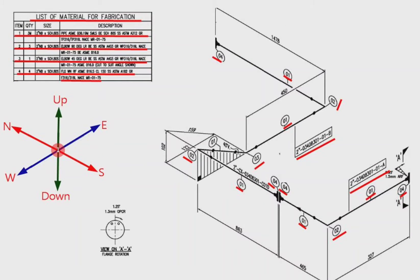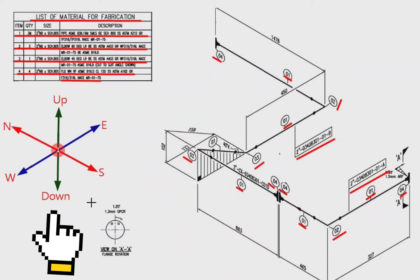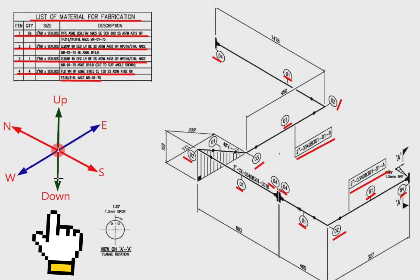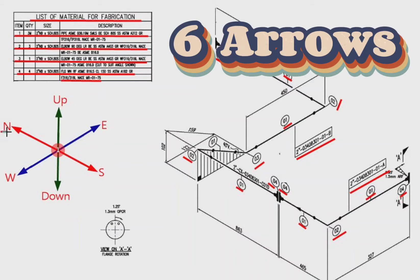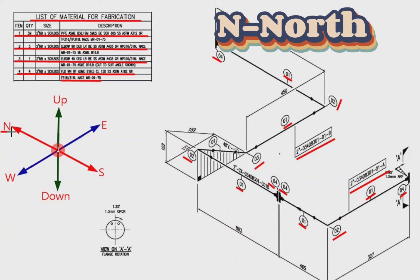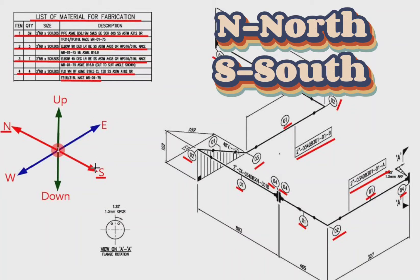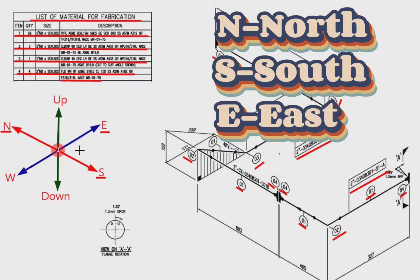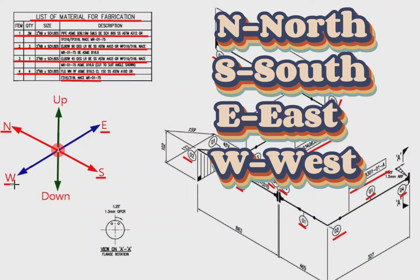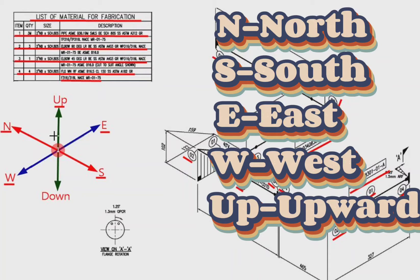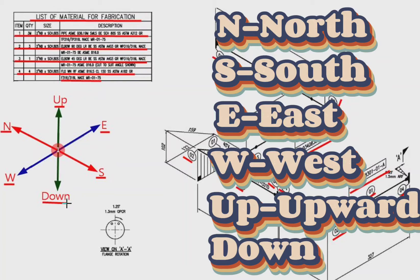Every pipe drawing has a directional sketch. This indicates the directions. By studying these directions, we can easily read the pipe isometry. There are six directions here: N means north, S means south, E means east, W means west, Up means up, and Down means down directions.